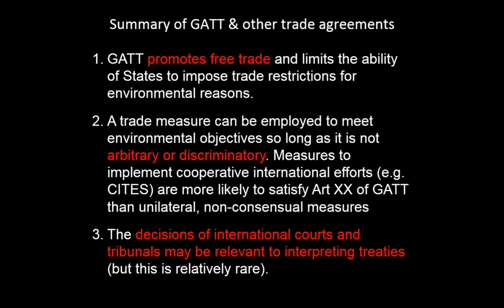To summarise GATT: it promotes free trade and limits the ability of states to impose trade restrictions. A trade measure can be employed to meet environmental objectives so long as it's not arbitrary or discriminatory. Measures implementing cooperative international efforts such as CITES are more likely to satisfy those requirements. Decisions of international courts and tribunals may be relevant for interpreting treaties. Let's take a five-minute break and come back to talk about human rights and briefly about Antarctica for about the next half hour before our workshop.